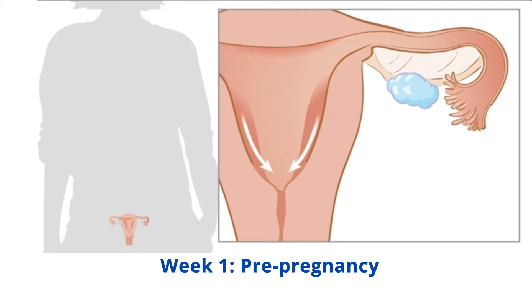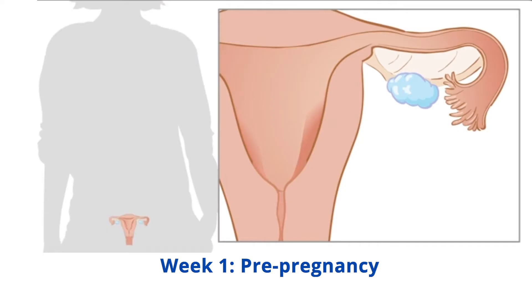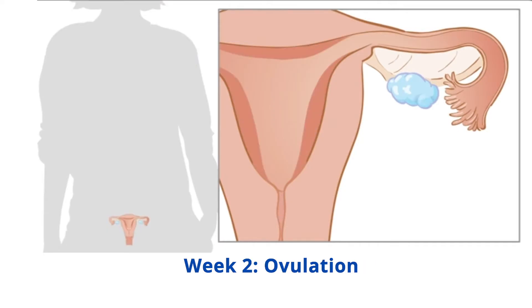Week 1 - Pre-pregnancy: the weeks of pregnancy are counted from the start of the woman's last menstrual period. When your menstrual period begins and the lining of the uterus is shed, hormones in your body are preparing another egg for release.